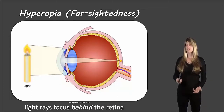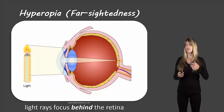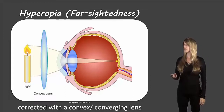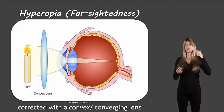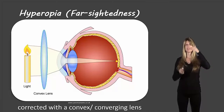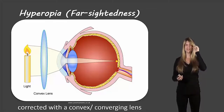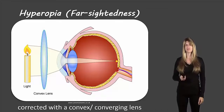Hyperopia is the opposite — it's called farsightedness. In this case the light rays focus the image behind the retina, so what we see on the retina is blurry. To fix this we use a converging lens. Since the light rays are not converging strongly enough, a converging lens starts to converge them before they reach our eye lens, and then our lens continues to converge them, giving us the stronger converging power needed to focus the light at the back of the retina.